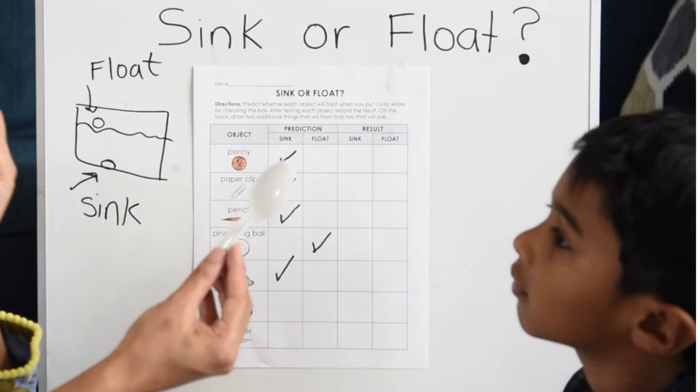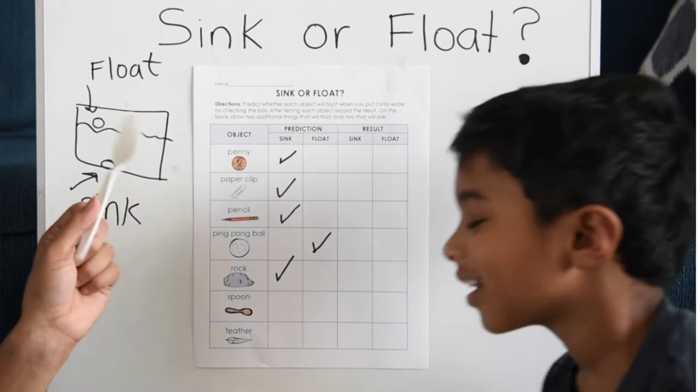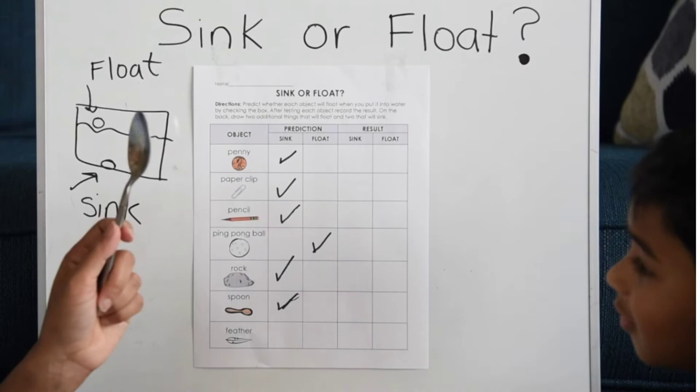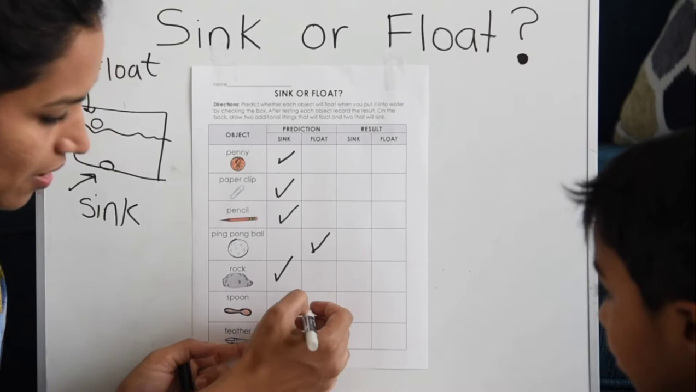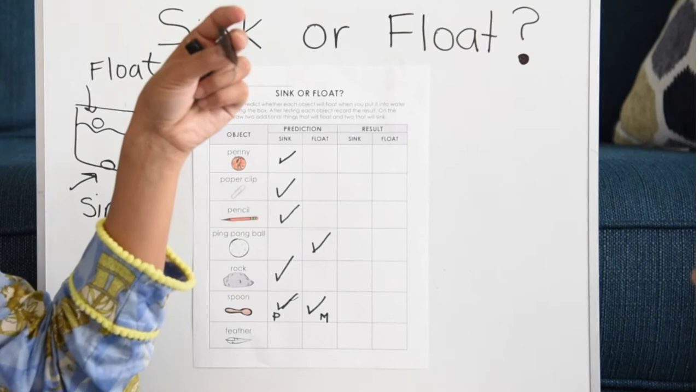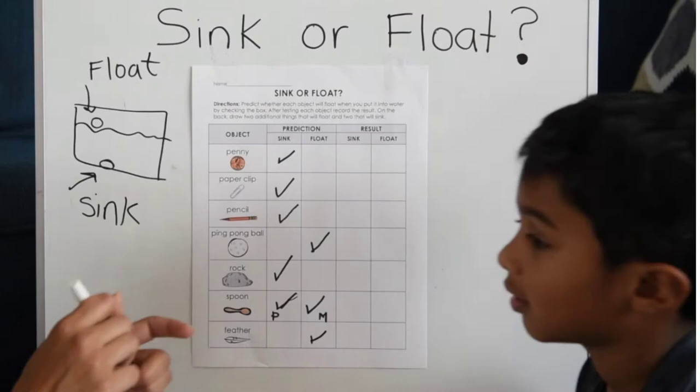All righty. We have spoons. So we are using two different spoons. We're using a plastic spoon and a metal spoon and we're going to try both. So what do you think is going to happen to the plastic spoon? Sink. Okay. What do you think is going to happen to the metal spoon? It's going to float. Okay. So this is P for plastic, this is M for metal. And then the feather, we have a little feather here. What do you think is going to happen to the feather? Float.